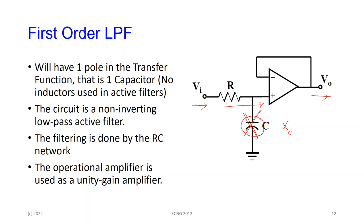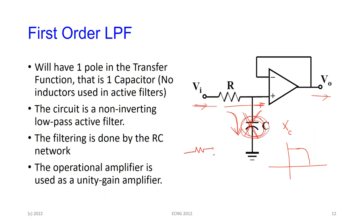As the signal frequency increases, the reactance of the capacitor starts to drop, so it starts to conduct more and more. More and more of the signal gets diverted through the capacitor and less goes into the op-amp. At low frequencies most of the signal passes through, but at high frequencies the capacitor starts to bypass or conduct away more of the signal, so the signal going through starts to drop. This is the low pass behavior.